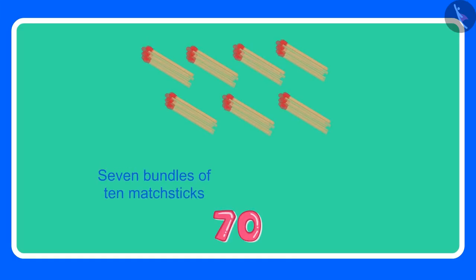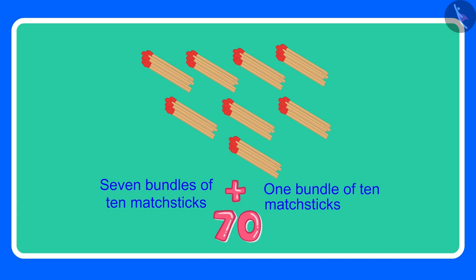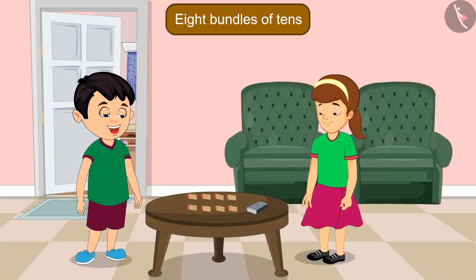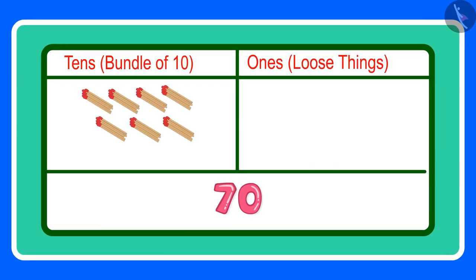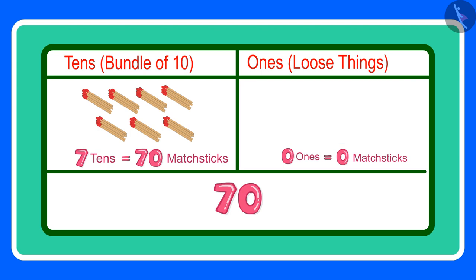Chotu counts and says: These are now 70 matchsticks. Arti asks: How many bundles have you made? Chotu replies: For 70 we needed seven bundles, but 70 has a zero which means 10 more matchsticks, so I have made eight bundles of 10. Arti corrects him: You are not doing this correctly, Chotu. 70 has seven tens and zero ones. Zero ones means there is not even a single loose matchstick. For 70 matchsticks you only need to make seven bundles of 10 each.